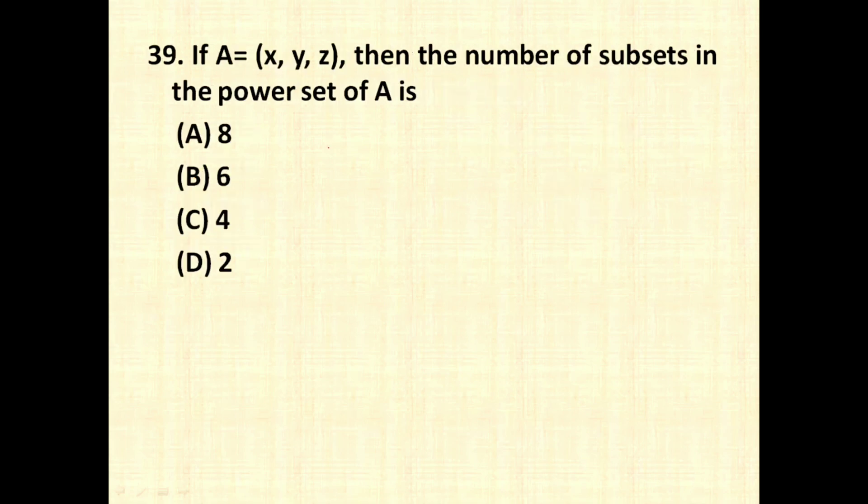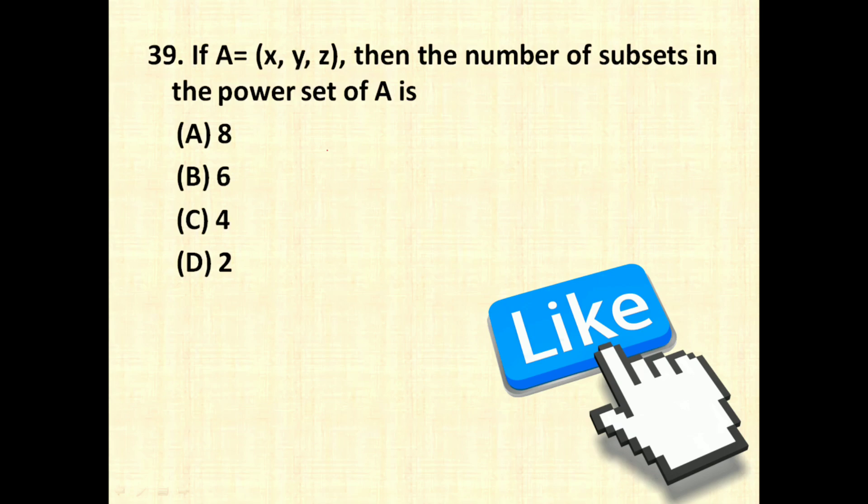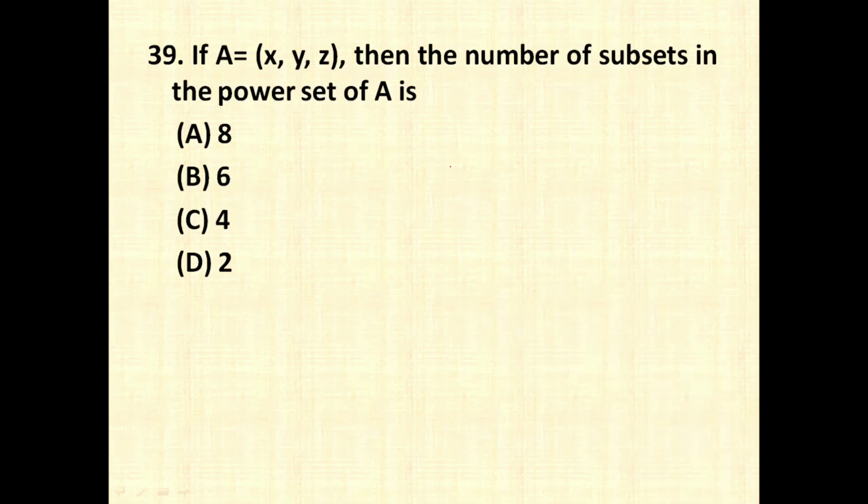If A is equal to X, Y and Z, then the number of subsets in the power set of A is going to be. Power set is nothing but a set which includes all the possible outcomes of a subset. So let us see, if we have A equal to X, Y and Z, what are the different power sets of this? Power sets will be first X, Y, Z as it is, then we can have X and Y, we can have X and Z, we can have Y and Z, we can have only Y, only Z, only X, or there can be a null set, nothing in that particular set.